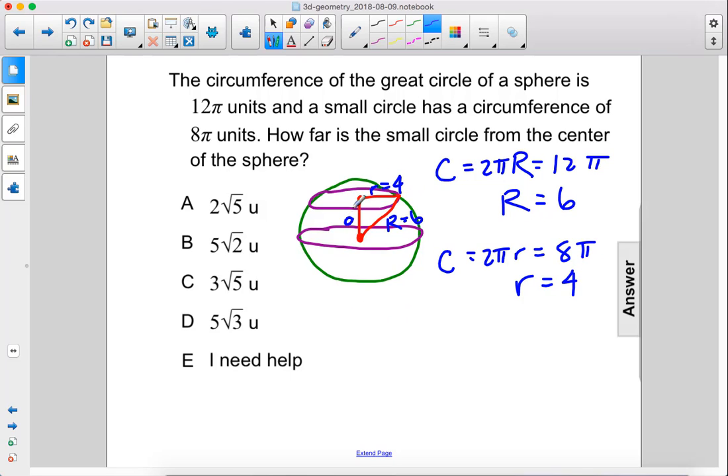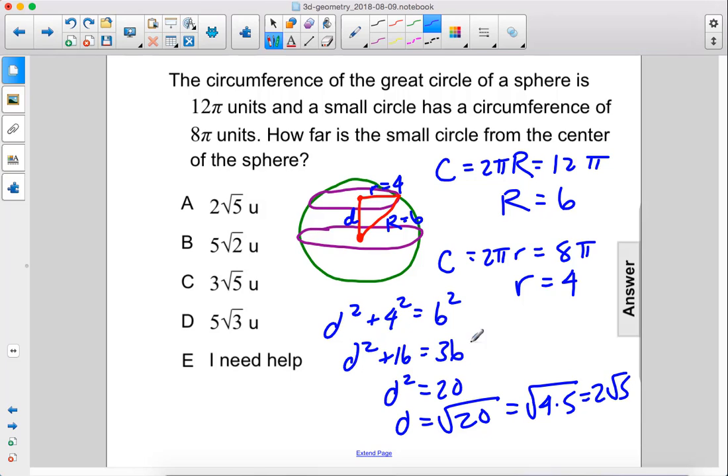So, if we're trying to find this distance here, we'll call that lowercase d. d squared plus 4 squared equals 6 squared. d squared plus 16 equals 36. d squared equals 20. d equals the square root of 20, which equals the square root of 4 times 5, which is 2 times the square root of 5.